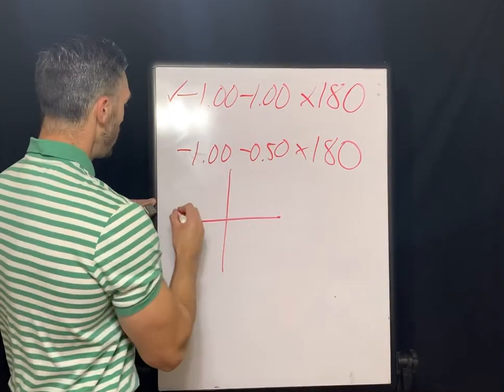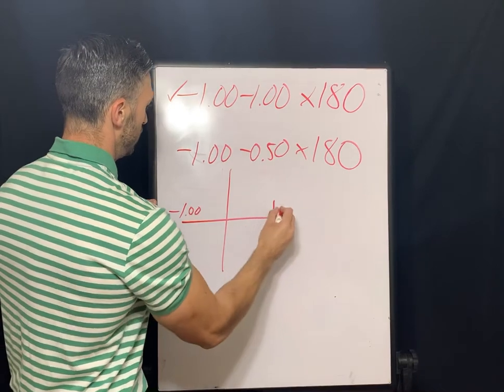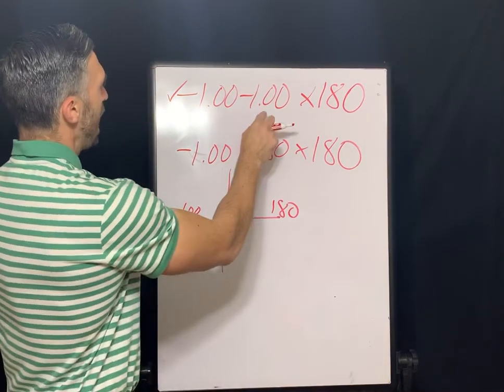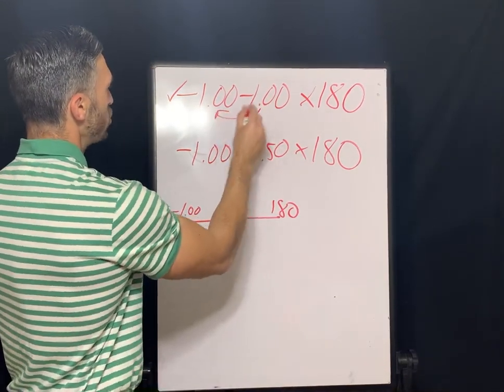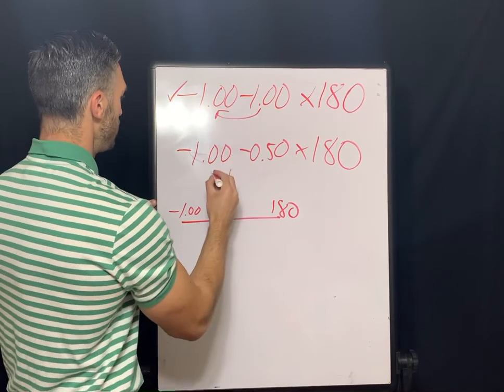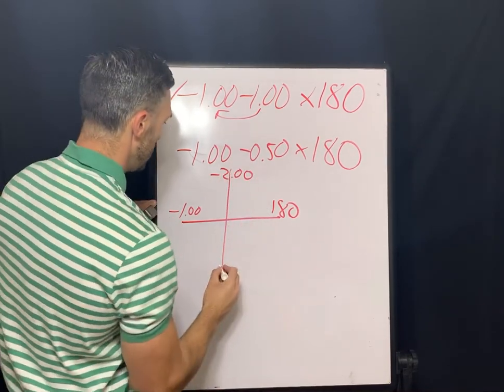So first thing I want to do is put this original prescription on the optical cross. That's a negative one at 180. And then we would get, when we transpose it, we get negative two axis 90.